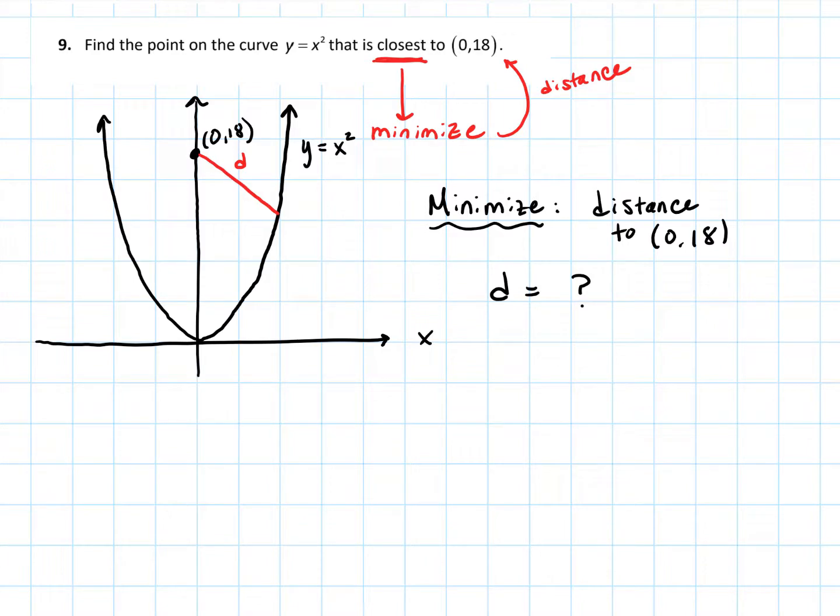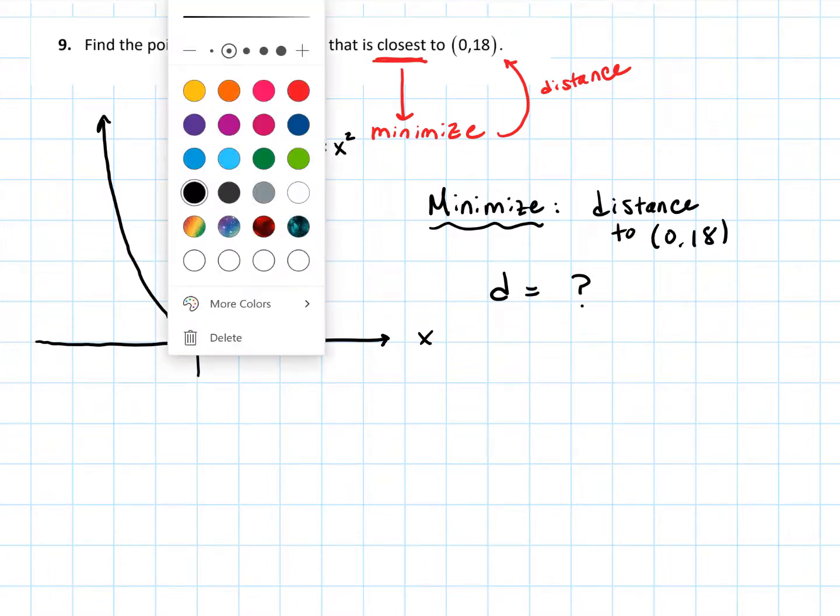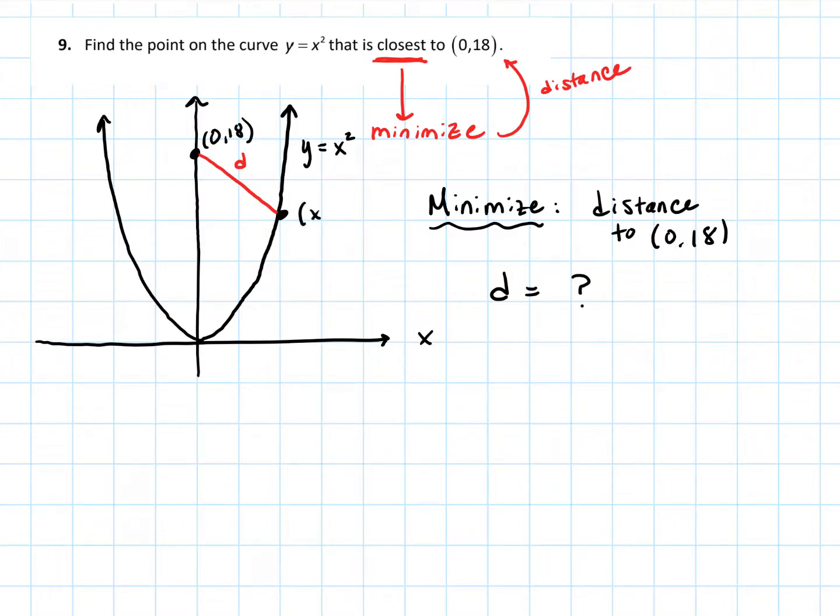We want to minimize the distance to (0,18). Now we got to figure out how could we represent that mathematically? Well, we can use our distance formula to do that. The constraint is that the ordered pair (x,y) must lie, in terms of constraints we do always think about what is the constraints given. The constraint that is given is that the ordered pair (x,y) must lie on y equals x squared. So it must be true that the ordered pair satisfies the relationship that y equals x squared.